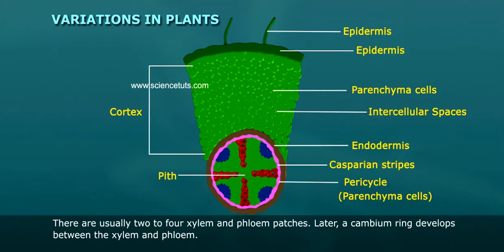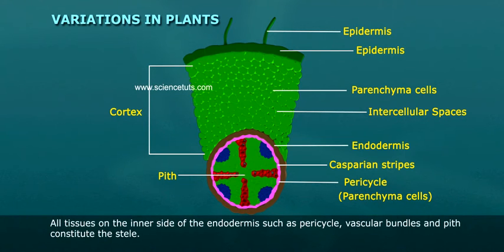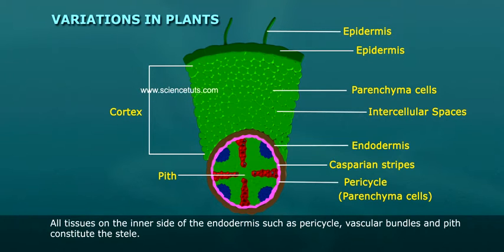Later, a cambium ring develops between the xylem and phloem. All tissues on the inner side of the endodermis, such as pericycle, vascular bundles, and pith, constitute the stele.